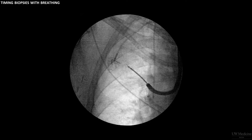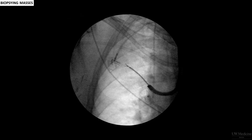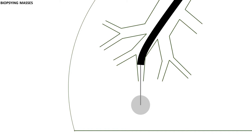When biopsying a mass visible on fluoroscopy, the manipulation of the forceps is a little different than when taking biopsies for diffuse disease. The closed forceps are passed until they appear to be within the mass and do not have to be passed until you meet resistance. Once the forceps appear to be within the mass, retract a couple of centimetres, open the forceps and pass the open forceps until they appear to be within the mass again, then close, hold, and withdraw.